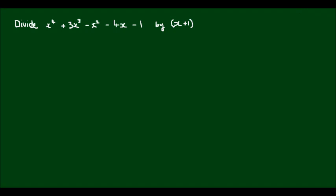I would write this out in exactly the same fashion. My dividend, which is x to the power of fourth plus 3x cubed minus x squared minus 4x minus 1, I'm going to write inside this bar. And I'm going to write my divisor x plus 1 outside of this bar.